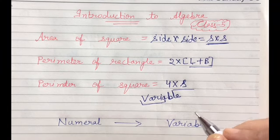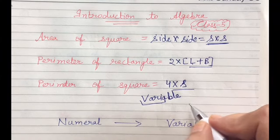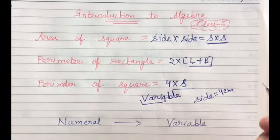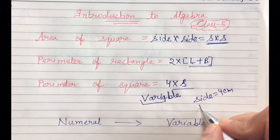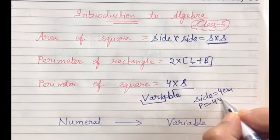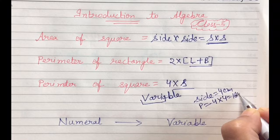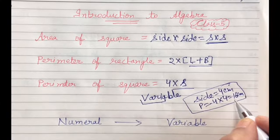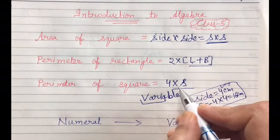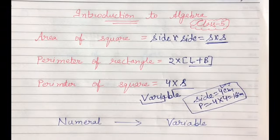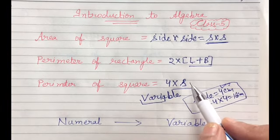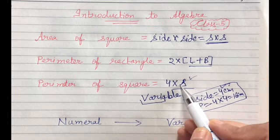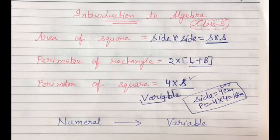If I have taken a side of a square which is 4 cm, then what do we have? 4 multiplied by 4 equals 16 cm. So this I have calculated. What did I have done? This value is put here.